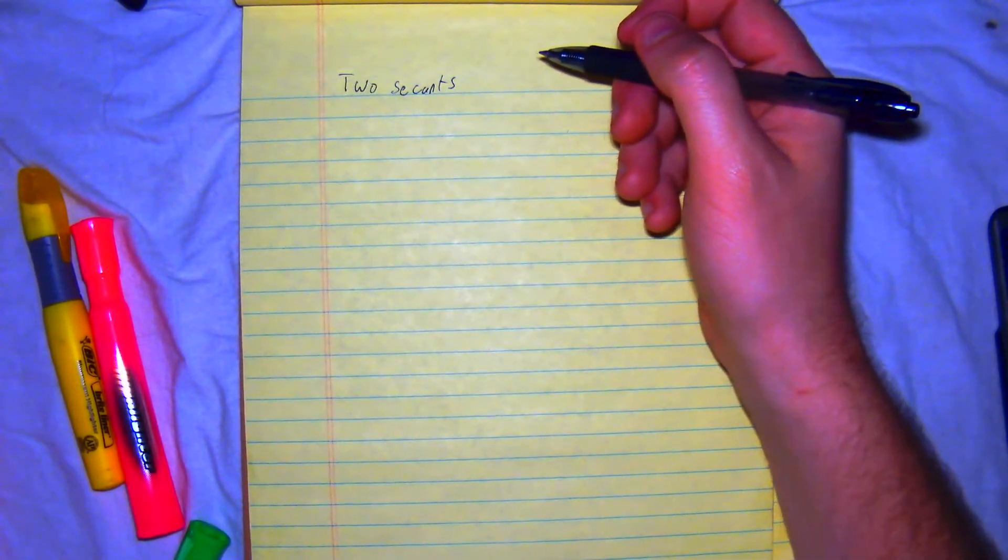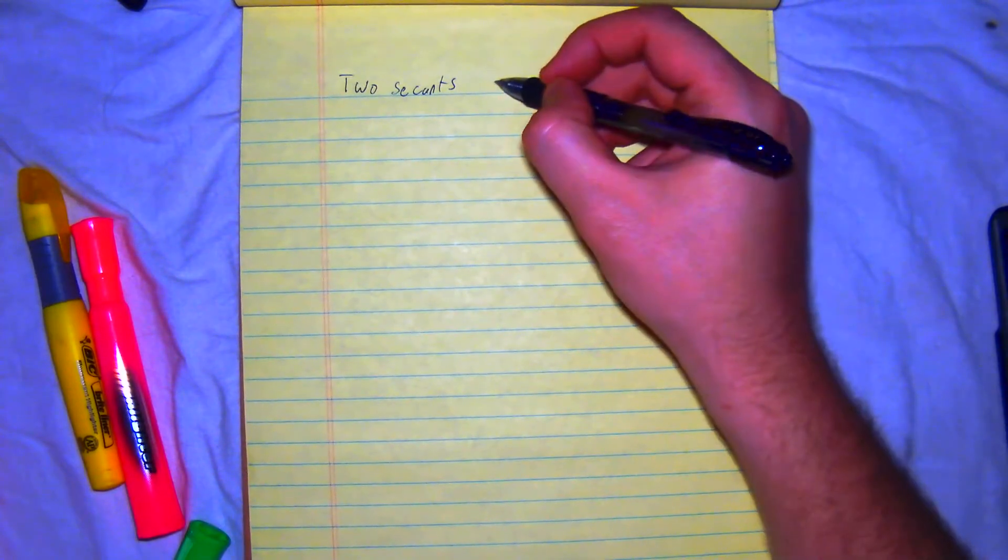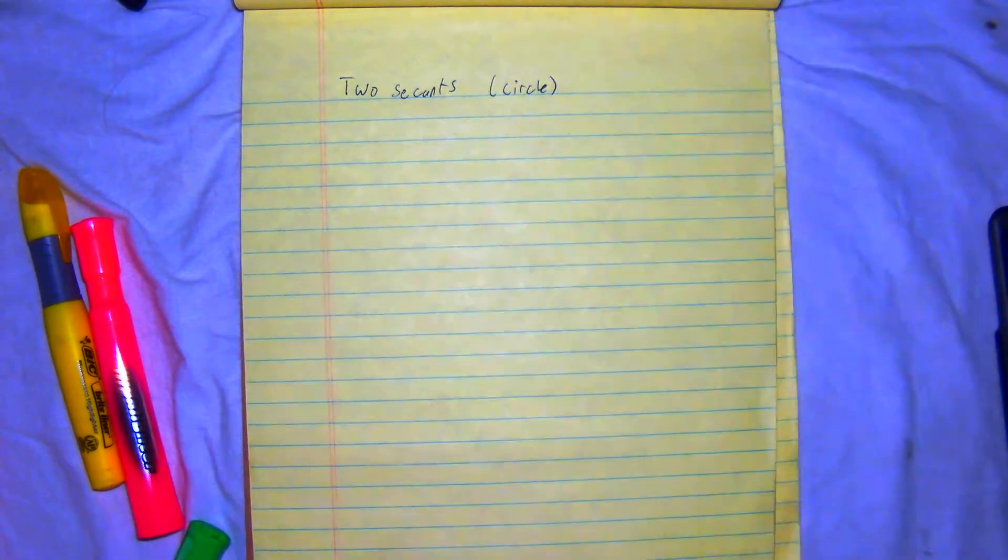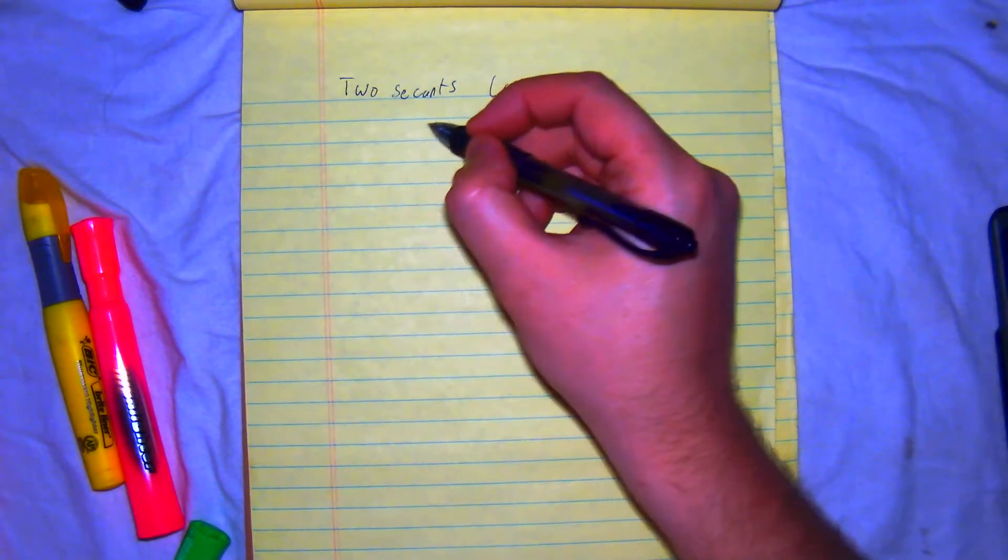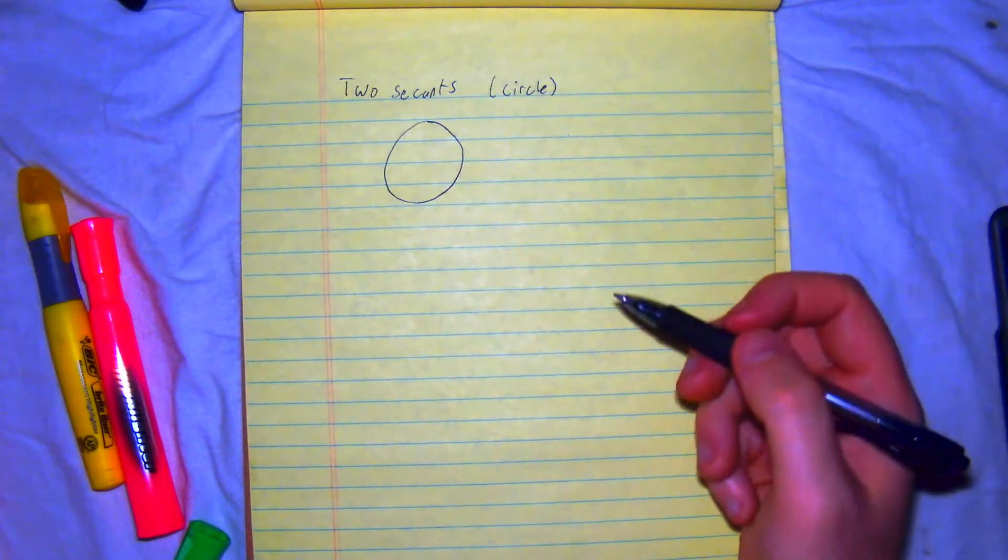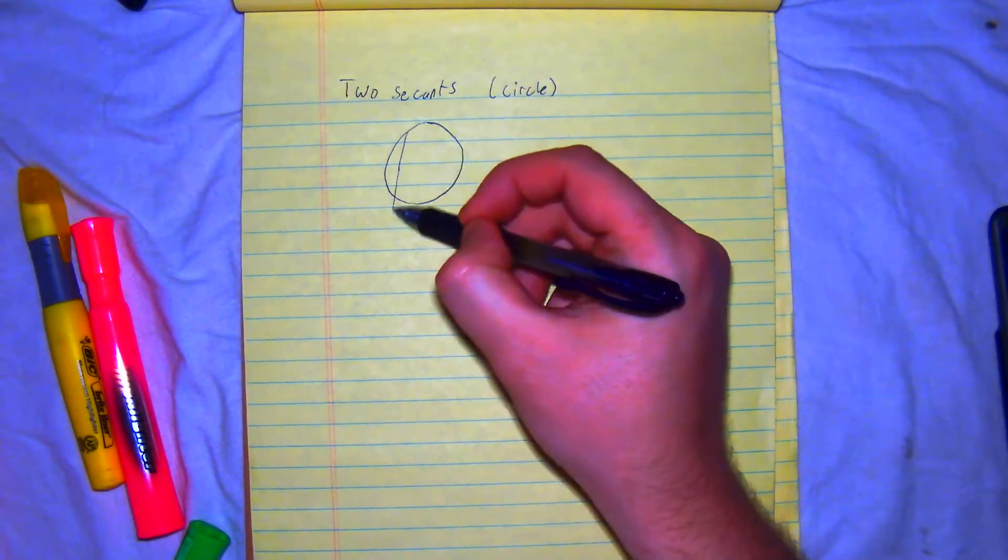And again, we're talking about two secant line segments, the length of them, and it's pertaining to a circle. All right, so first, let's draw a circle, and then draw our two secants.